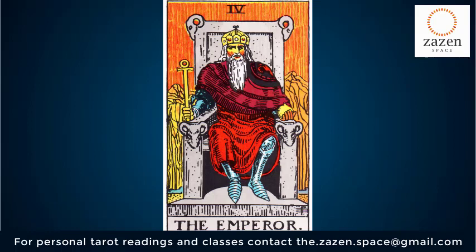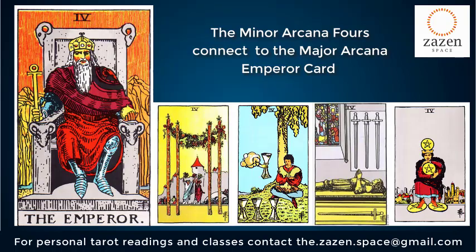What happens when you are introduced to the father figure? That is the figure of structure and authority. He is the one that gives stability; he creates a feeling of security in the house. You see that common thread between the Emperor and the fours — that stability, that structure — that is what the Emperor and the fours represent.